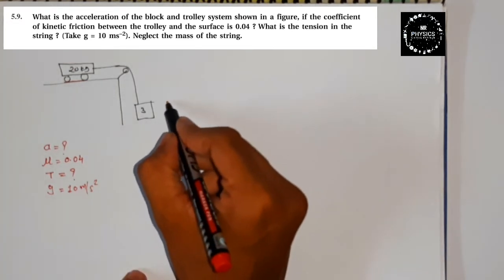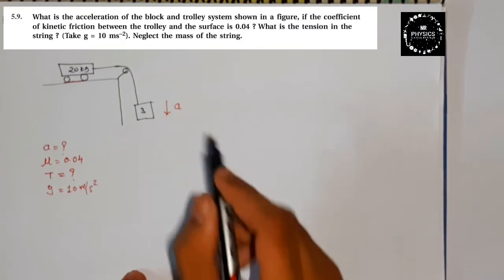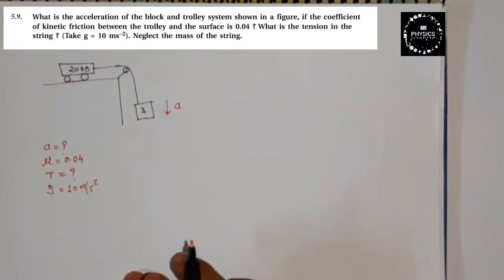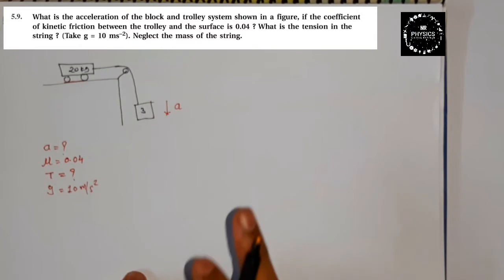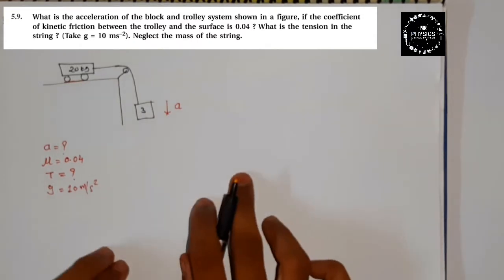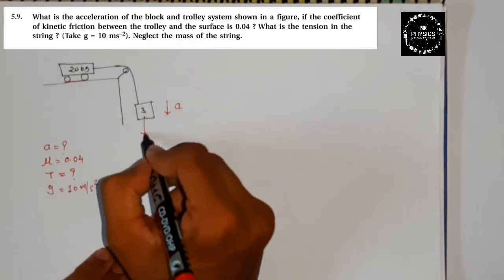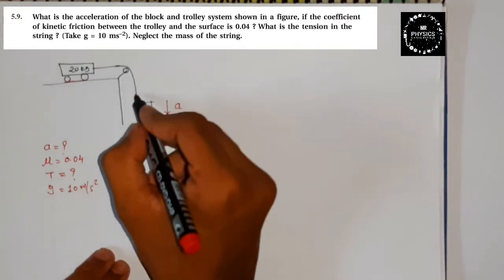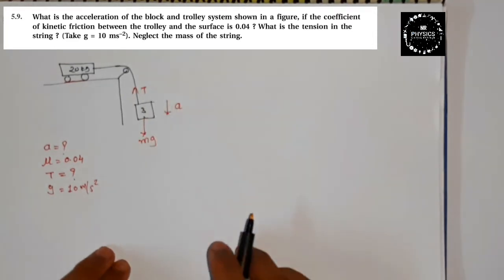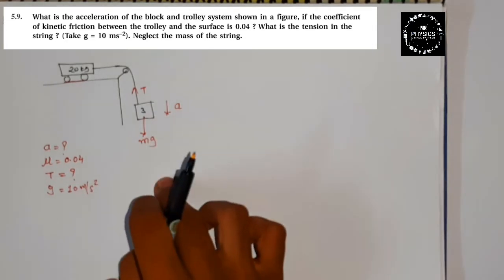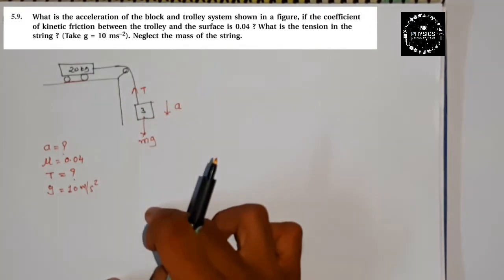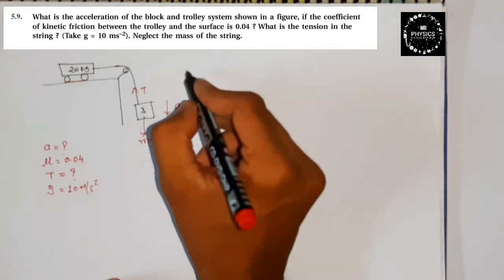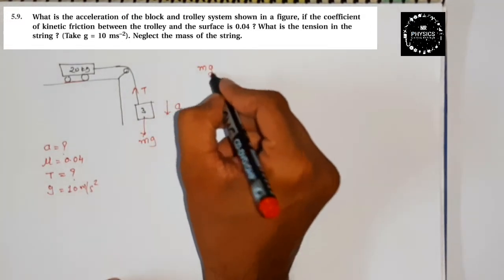Abhi yaha pe according to the figure, yeh block is direction mein accelerate ho raha hai. Ek cheez common cheez yaad rakhega. Jis direction mein acceleration ho raha hai, woh direction humein positive lena hai. Abhi yaha humein pata hai downward mein kya laga? Mg. Aur uske opposite mein jo force laga woh hai T, tension force T. Uske opposite mein minus T. To humein yaha pe mg downward mein le rahe hain, kyunki acceleration is direction mein ho raha hai.